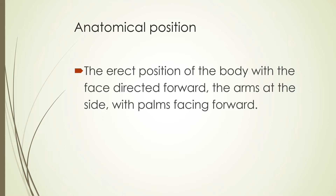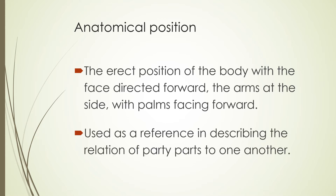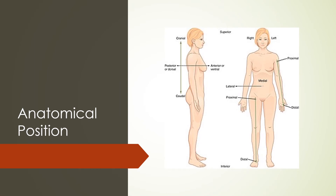This is just a picture of those directional terms. Anatomical position is going to be the erect position of the body with the face directed forward, the arms at the side with the palms facing forward, and the thumbs pointed out. This is going to be used when you're talking about or referencing a relation of body parts to one another, like the arm to the leg and the foot to the hand. This is just a picture of anatomical position — standing straight, feet shoulder width apart, palms facing forward, thumbs out.